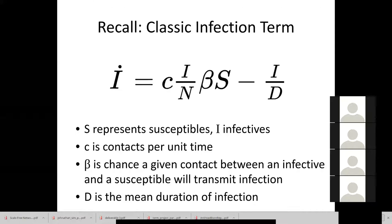We're hearkening back to SIR models. We're going to focus on I, the number of infectives. You'll recall I-dot is the rate of change — if it's 10, that means 10 more people are infected per unit time. We had the formula with force of infection C times I over N times beta, all times S. C times I over N times beta is the chance per unit time a susceptible will get infected, and then we subtract I over D, reflecting recovery where D is the mean duration of infection.